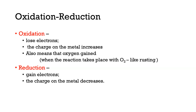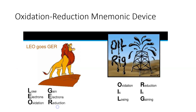Whereas oxidation has the metal increasing in charge, reduction is going to have the metal decreasing in charge — it's going to lose positive charge. There are two mnemonic devices to help you remember. The first is LEO the lion goes GER: Loss of Electrons is Oxidation, Gain of Electrons is Reduction. Or the more recent one is OIL RIG: Oxidation Is Loss, Reduction Is Gain.